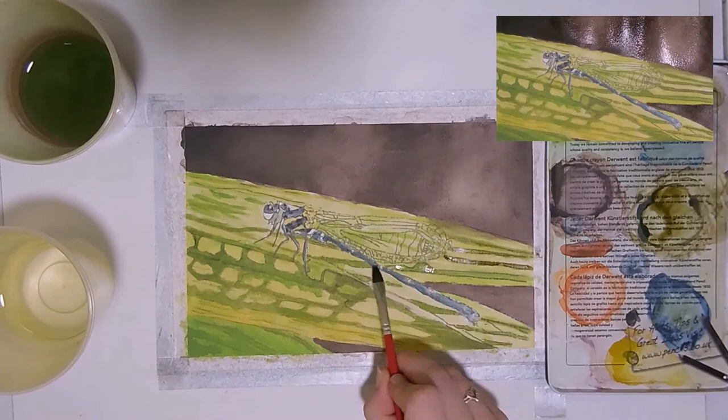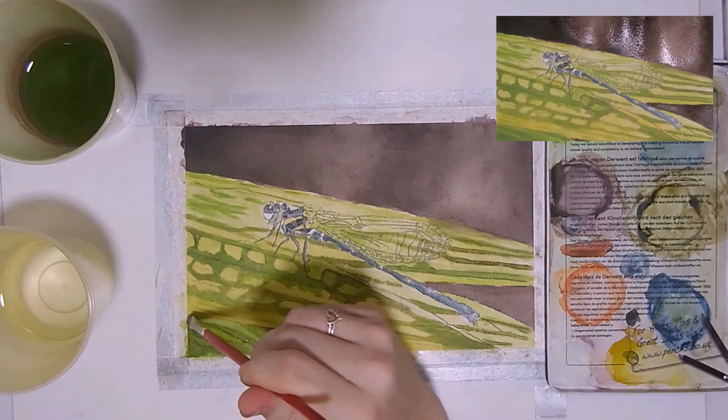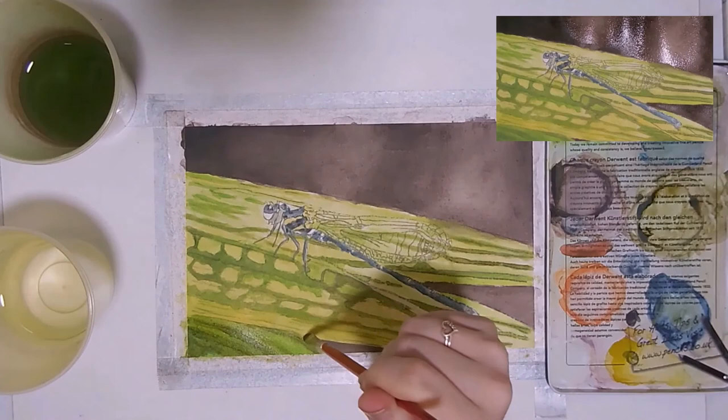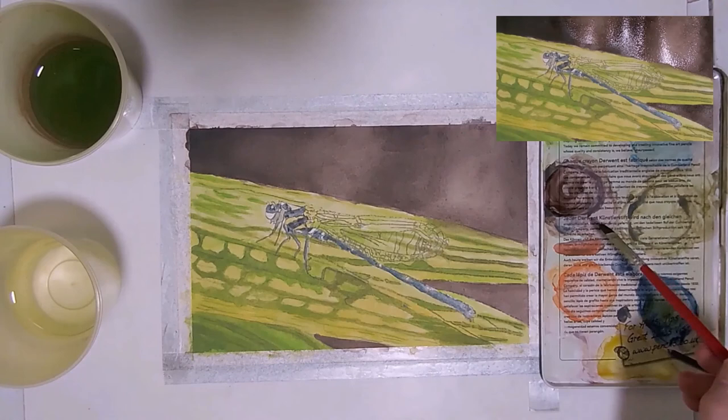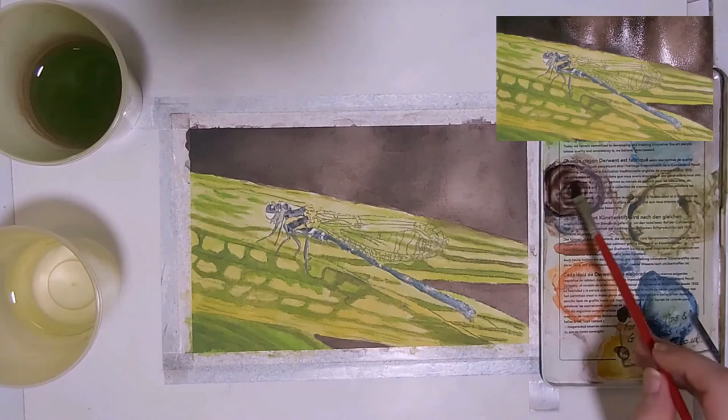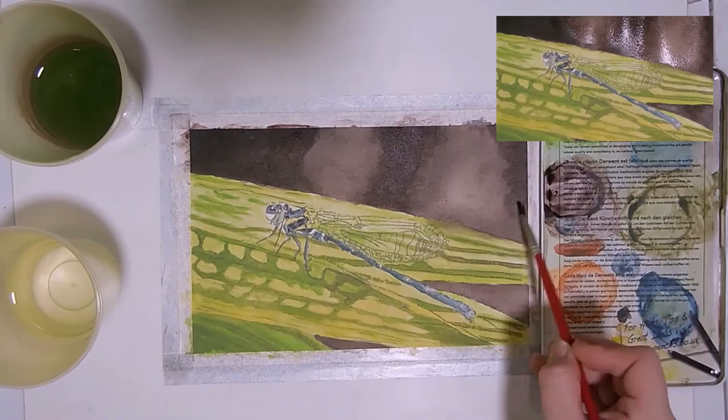Next, I glaze light green over the bottom leaf. Then I add more yellow to the highlights. Lastly, I add another layer of brown to the shadows and just water to the highlights, to soften the edges between the values in the background. That is it for this video.